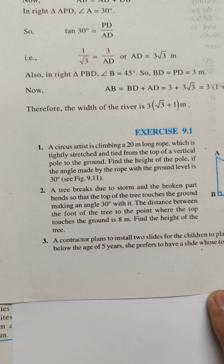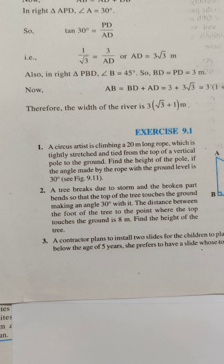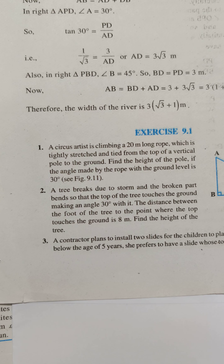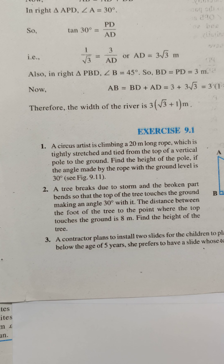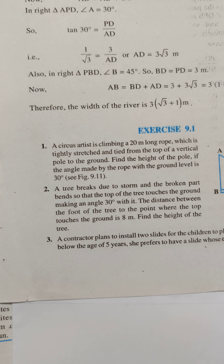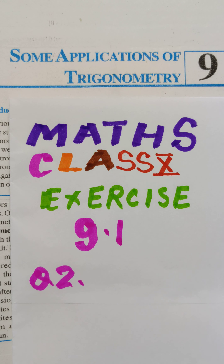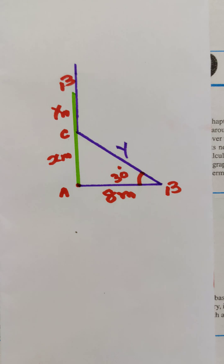The tree breaks due to a strong wind and the broken part bends so that the top of the tree touches the ground, making an angle of 30 degrees. The distance between the foot of the tree and the point where the top touches the ground is 8 meters. We have to find the height of the tree.